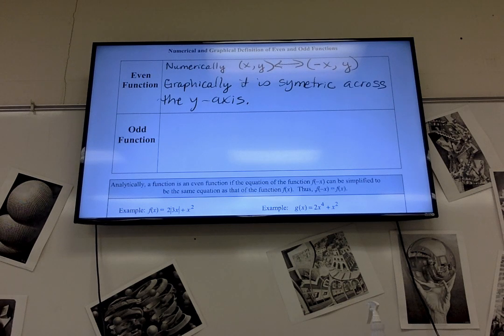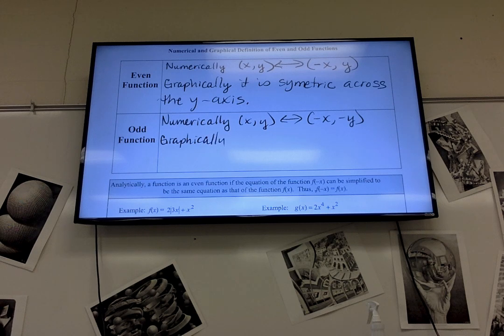So, with odd functions, numerically, if you have the point x, y, then you should also have the point negative x, negative y. So, graphically, it is, we call it, it has rotational symmetry about or across the origin.